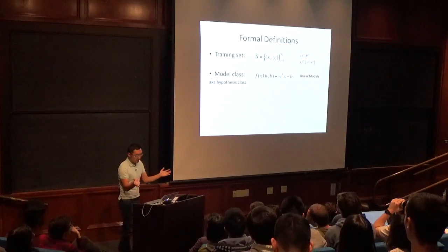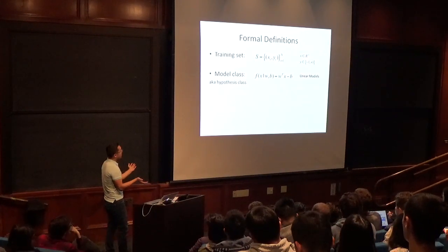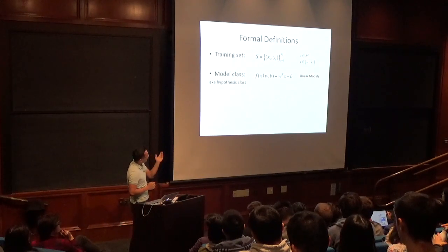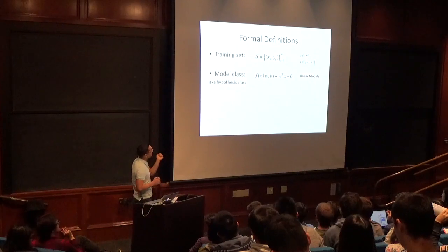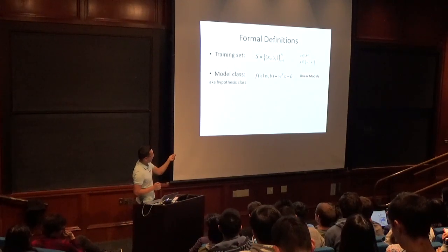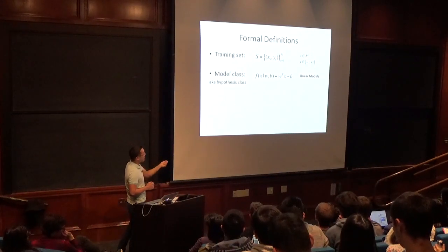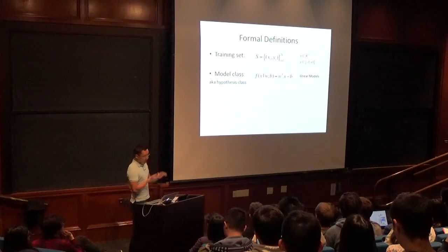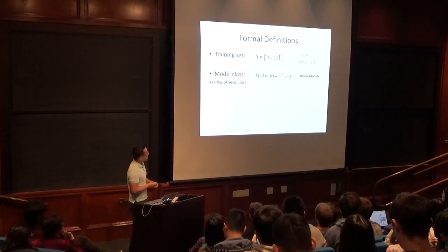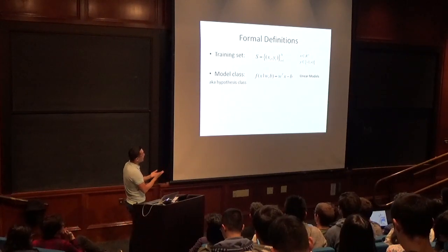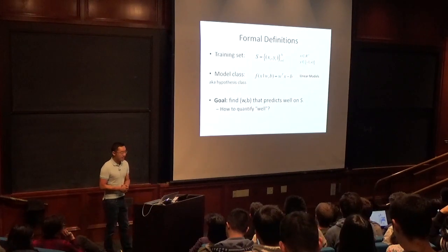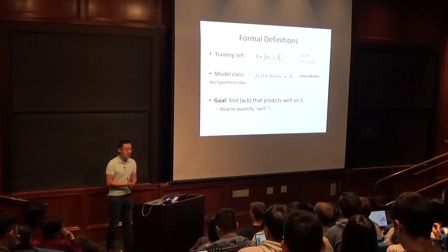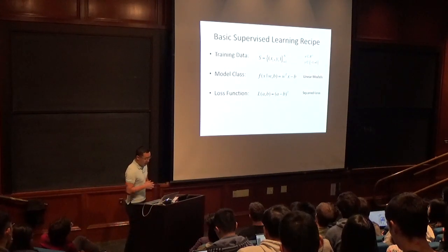Some formal definitions: we have training set S — a set of N pairs (X_i, Y_i) — where N is the size of the training set, X is a D-dimensional feature vector, and Y is binary in the classification case. We have a model class, also known as a hypothesis class — in this case, linear models, parameterized by weight vector W and scalar bias B. The goal is to find the parameters that predict well on the training set.